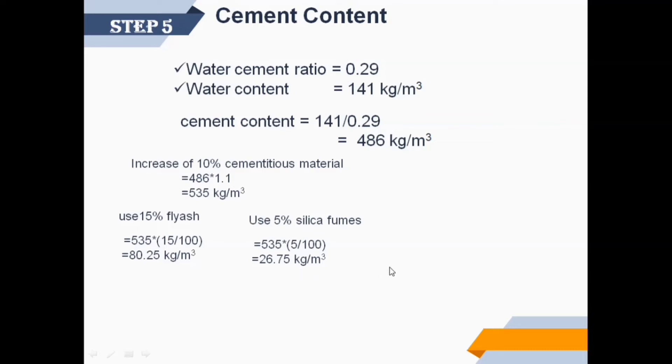Now subtract fly ash quantity and silica quantity from cementitious material to get cement content. Therefore, cement content equals 428 kilograms per cubic meter, which is less than 450 kilograms per cubic meter, hence okay. Now you get revised water-cement ratio as 0.264.